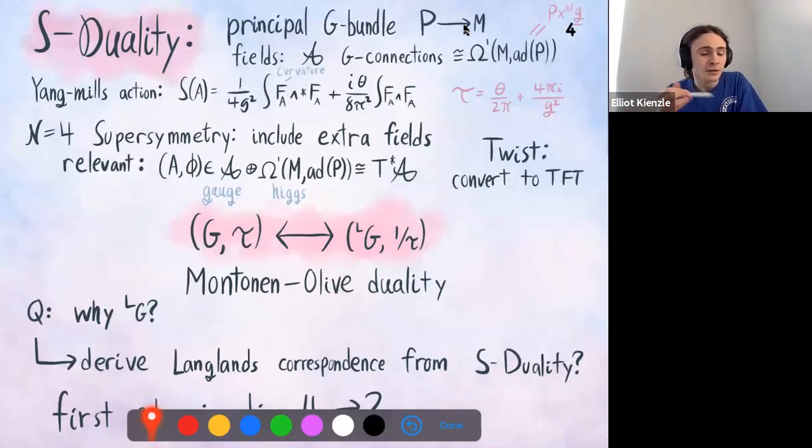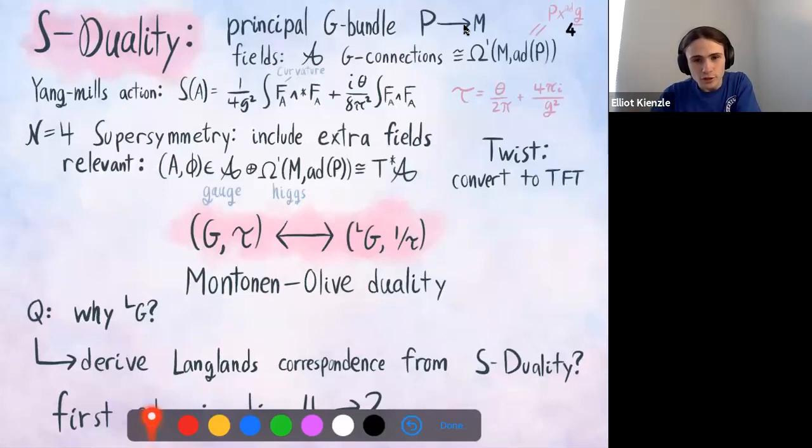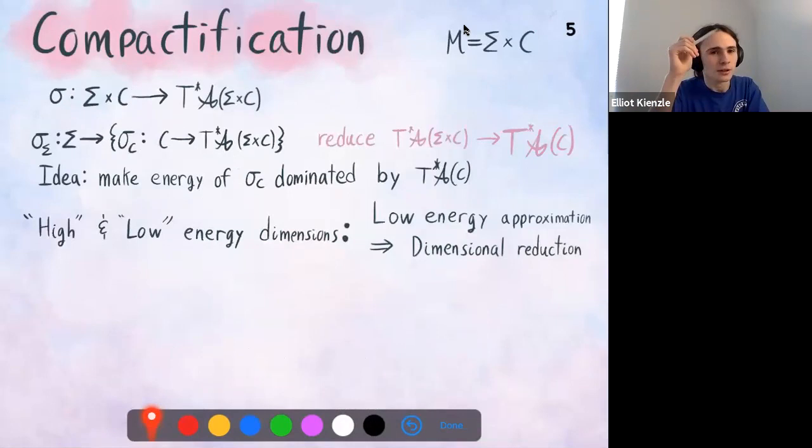Basically our goal, as physicists studying mathematics, is to derive the Langlands correspondence from this S-duality, from this Montonen-Olive duality. Hopefully this will give us a new perspective on Langlands duality, which will be useful for number theory. The first step is that Langlands duality is about studying things over curves, which are two-dimensional, but this is a four-dimensional space — so we have to cut off a couple of those dimensions.